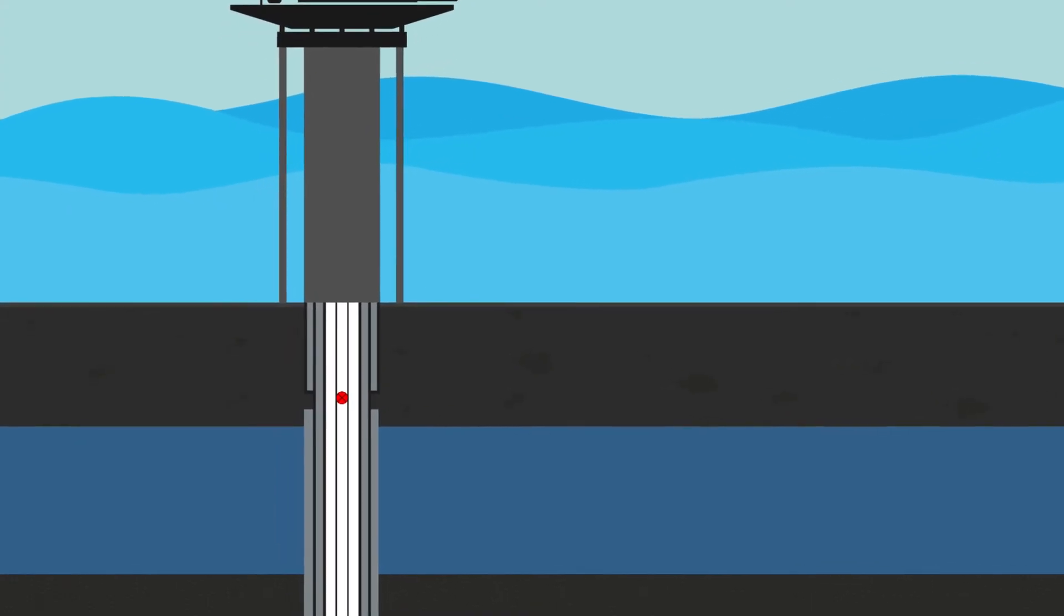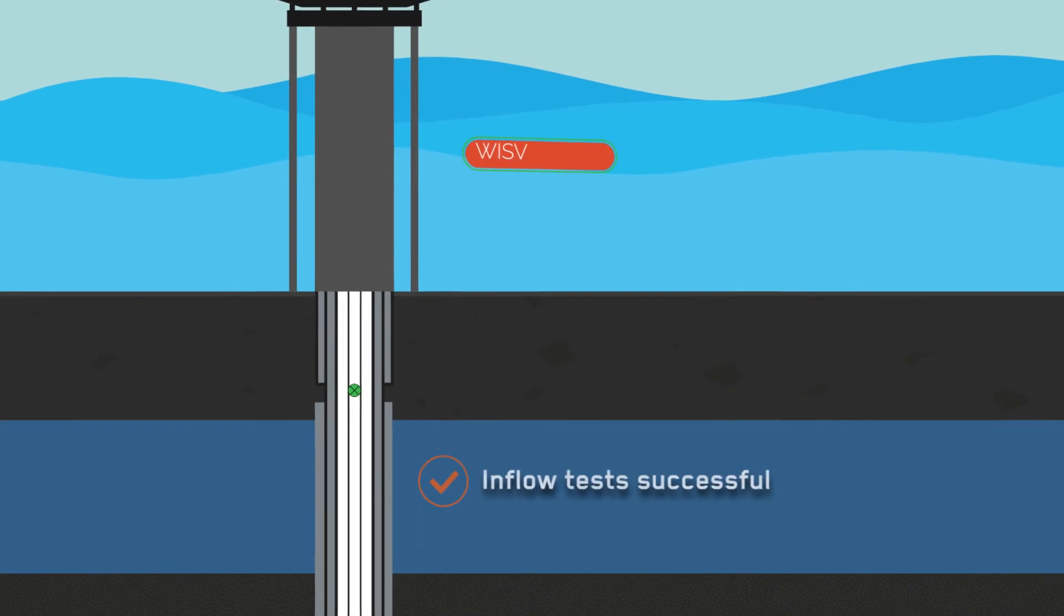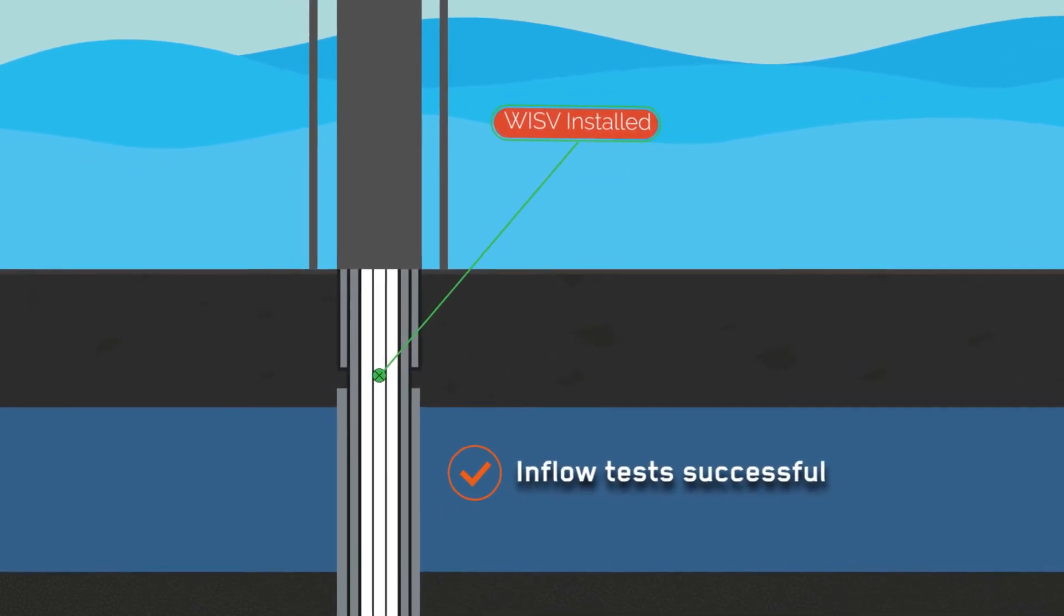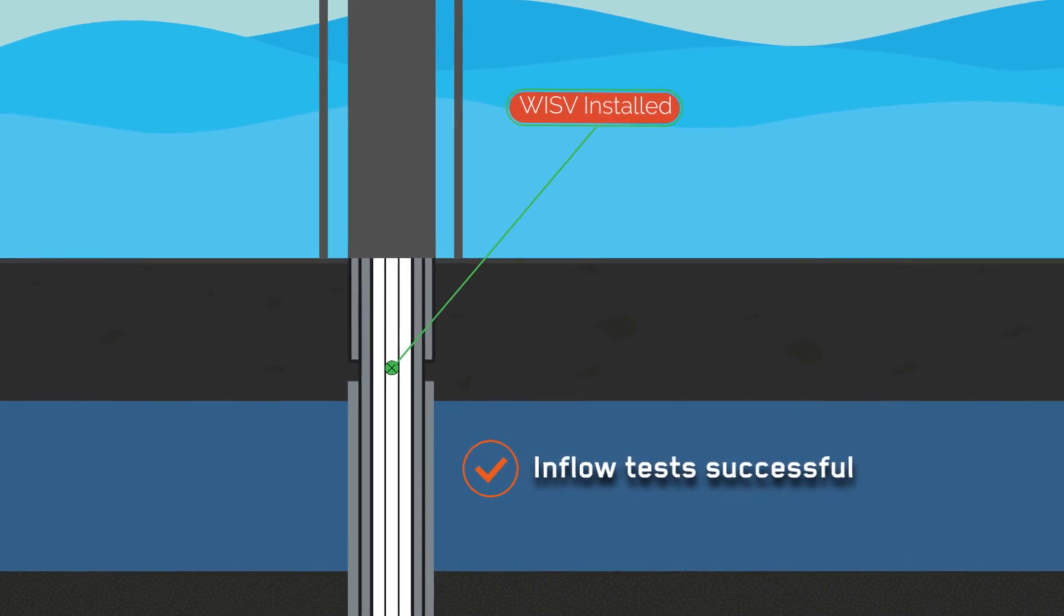With the visual information provided by the camera that the preparation runs were successful, the operator was able to proceed with installing the wire line insertable safety valve.